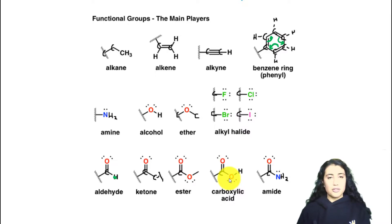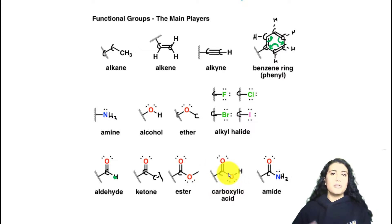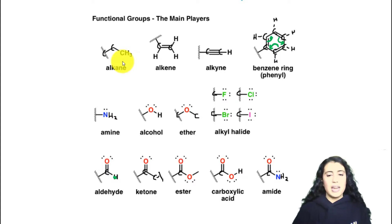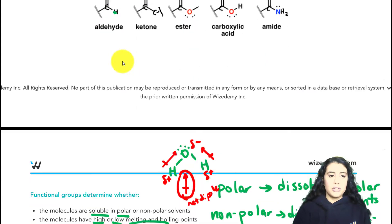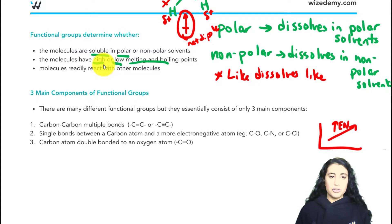That means it's going to take more energy to break the carboxylic acid apart because its bonds are stronger — the electronegative elements make the bonds polar and stronger. So the boiling point of carboxylic acid would be quite high. Whereas for an alkane, we don't see any of those electronegative elements, it's nonpolar, so it's a lot easier to break apart and the boiling point would be lower.